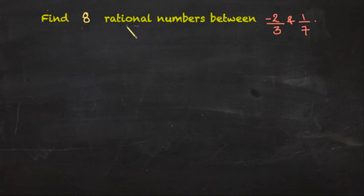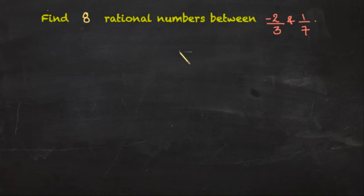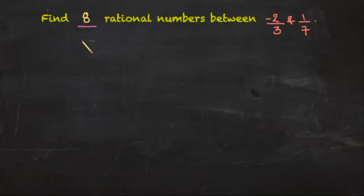Find eight rational numbers between negative two by three and one by seven. In the last video we saw how we can find one or two rational numbers using the concept of averages, but in this question they are asking us to find eight rational numbers. We can find them using averages, but that would be really hectic for us. So what can be the other way?